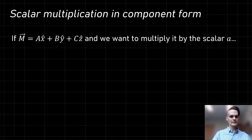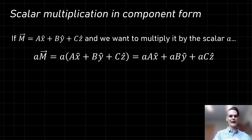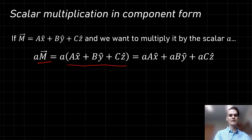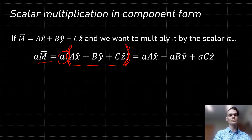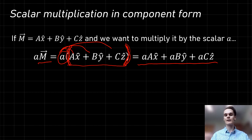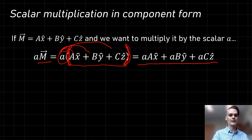So we have vector m multiplied by scalar a. We rewrite vector m in component form, with the scalar a on the outside of the parentheses. Because what we're doing is scalar multiplication, we can distribute the multiplication into each of these vector components. What we get as a result is vector m in component form where the scalar a has been multiplied by each of the vector components.